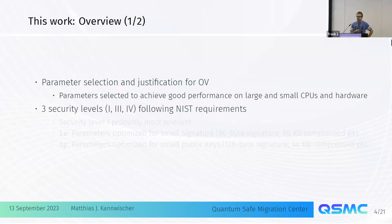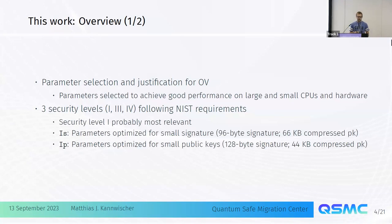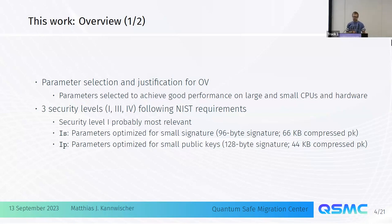We propose three security levels — level one, three, and five — for the NIST competition. We think security level one is most relevant for most applications, so we give two options: 1S, optimized for signature size giving 96-byte signatures, and 1P, optimized for public key size giving 128-byte signatures with about 44 kilobytes of compressed public keys. Very small signatures, but somewhat massive public keys.